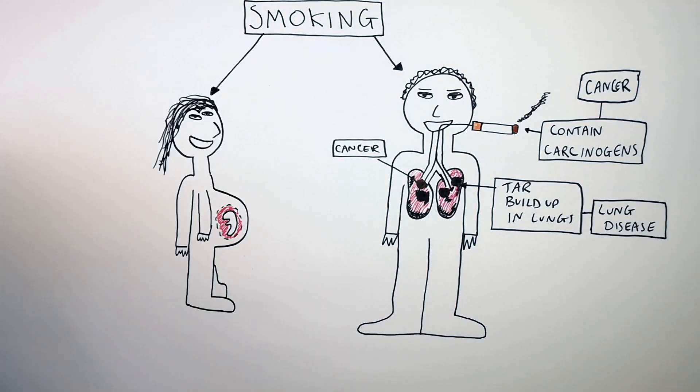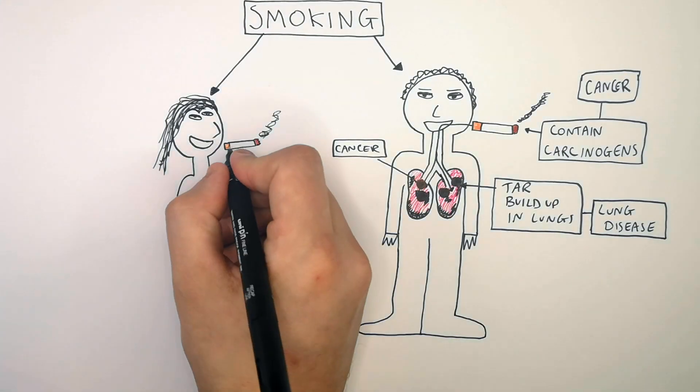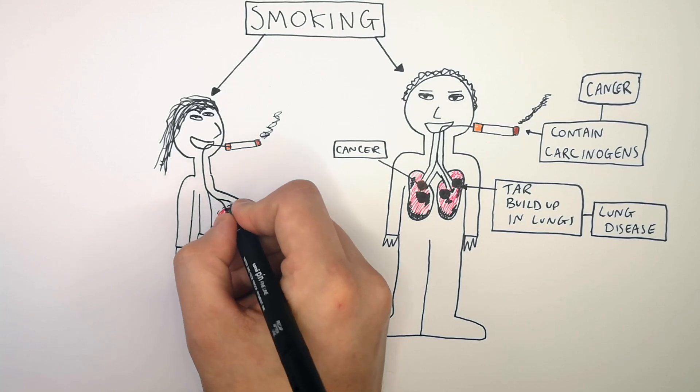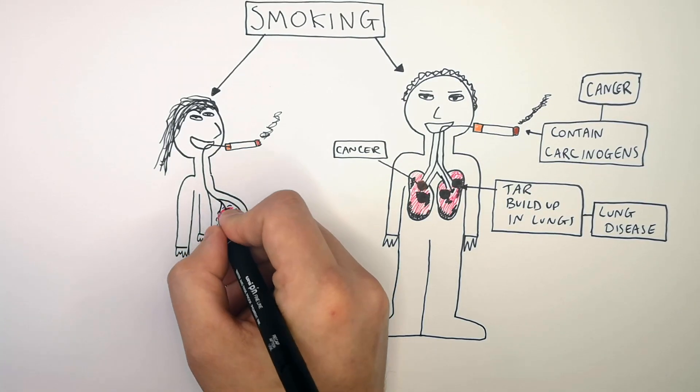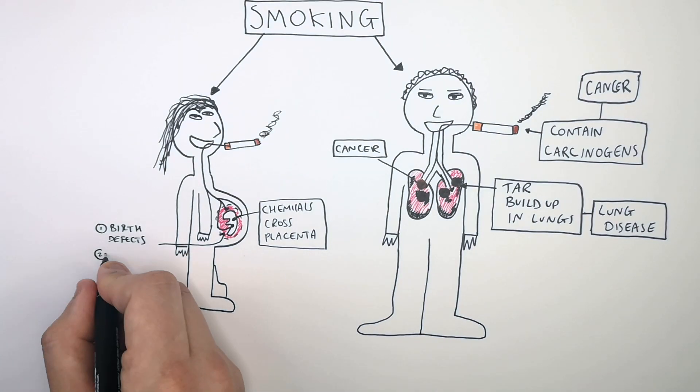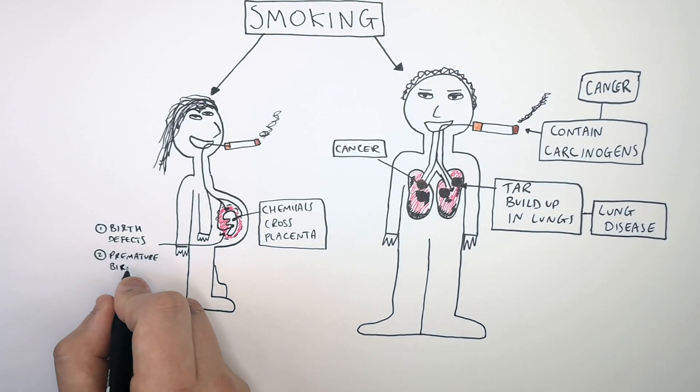A pregnant woman should never smoke, and you should never smoke around a pregnant woman. This is because the chemicals that cause cancer and lung disease can cross the placenta into the baby. This can cause birth defects in the baby as well as premature births.